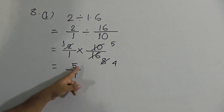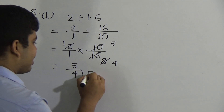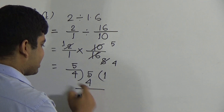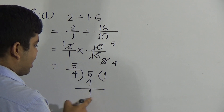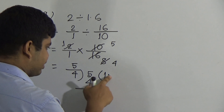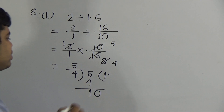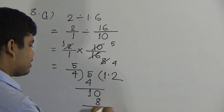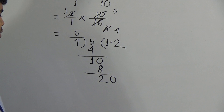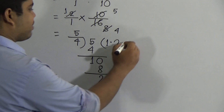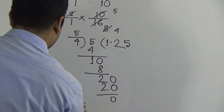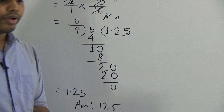Now we divide 5 by 4. In 5, 4 goes 1 time; 4 ones are 4, subtract and we get 1. Since 1 is smaller than 4, we place a decimal point and write 10. In 10, 4 goes 2 times; 4 twos are 8, subtract and we get 2. We get a 0 as a bonus after the point. In 20, 4 goes 5 times; 5 fours are 20. So 1.25 is the required answer.